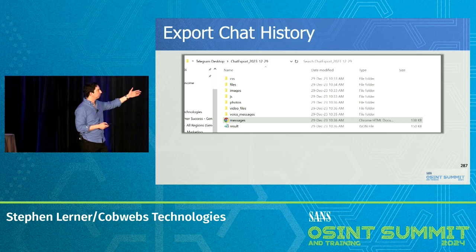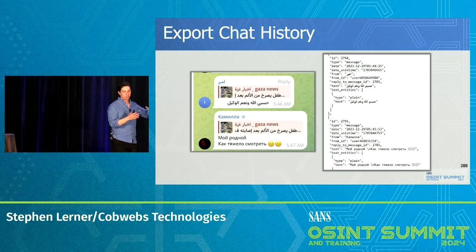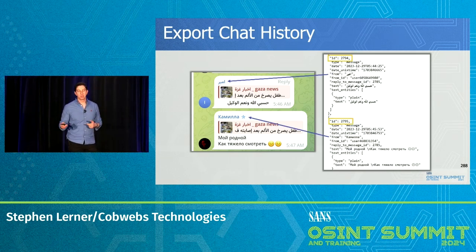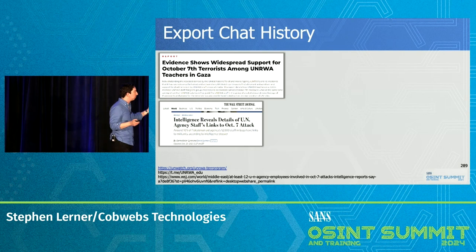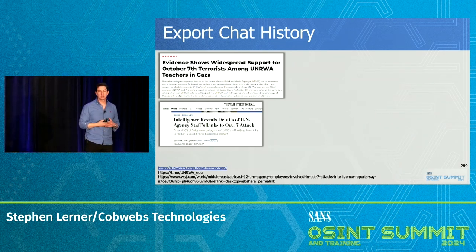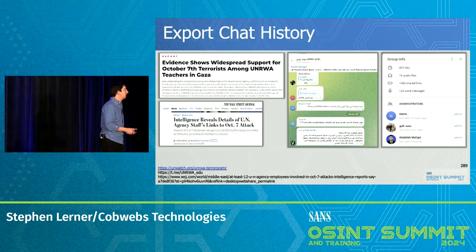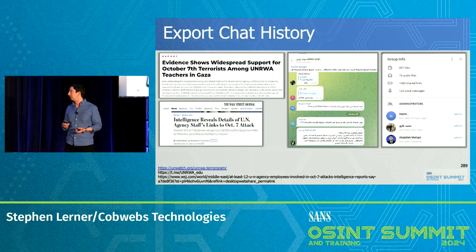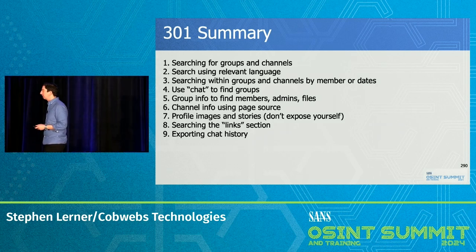The export will go to your computer where you can access all the information. You can see the message ID, the name of the person, and whether they replied to somebody above. This is important: UNRWA — the United Nations Relief and Works Agency — was employing Hamas members and their Telegram group as of two weeks ago was still open. You want to grab that data to preserve the evidence before they realize it's open for the public to see. So that's the summary of tips and tricks on how to investigate Telegram.